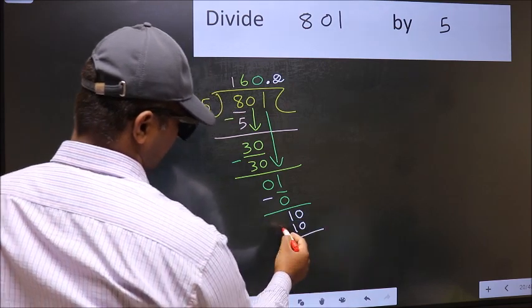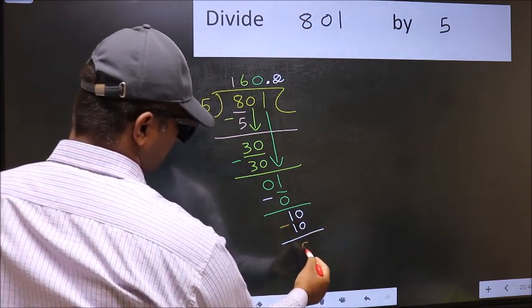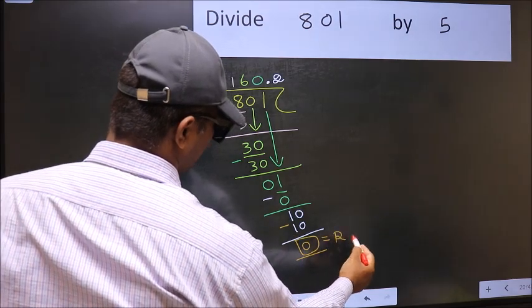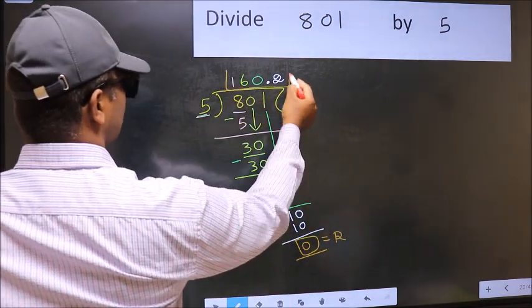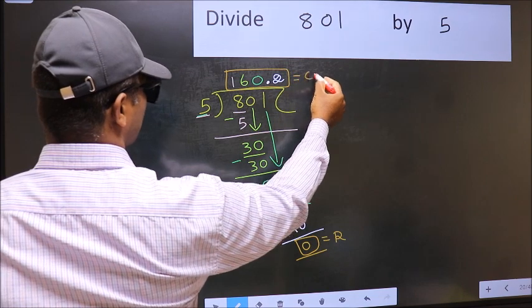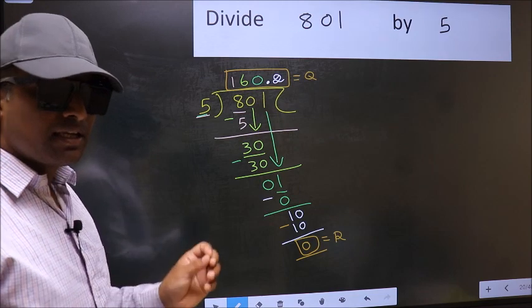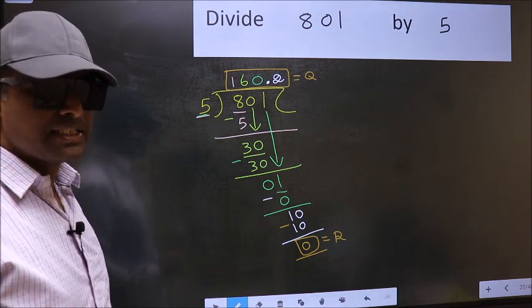Now you should subtract. 10 minus 10, 0. So this is our remainder. And this is our quotient. Did you understand where the mistake happens? You should not do that mistake.